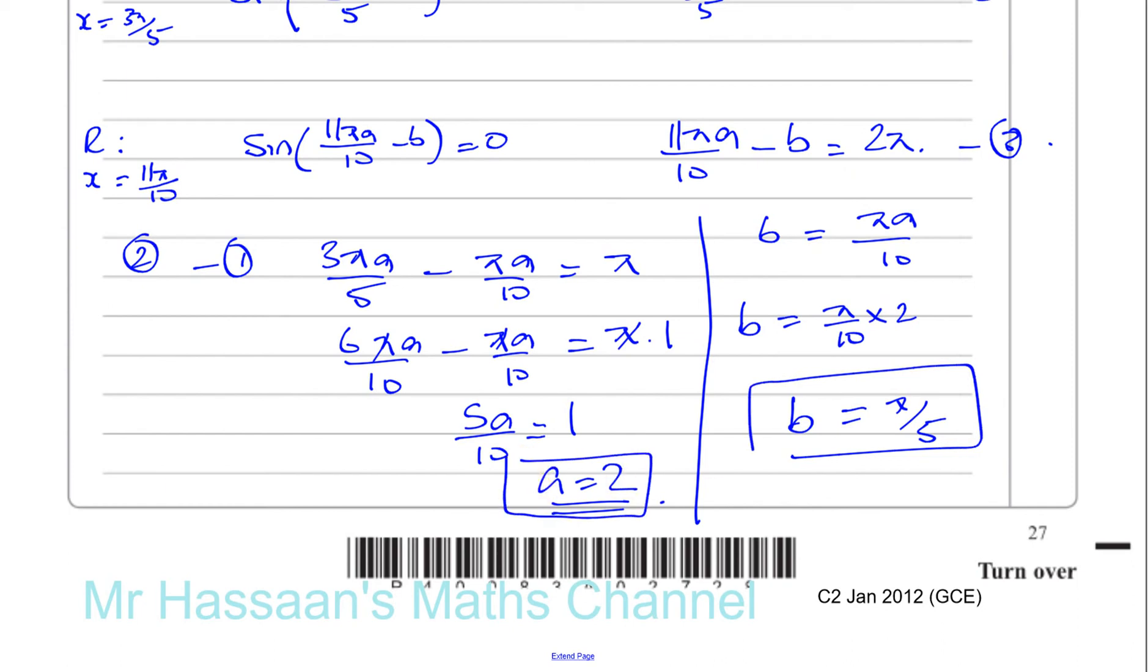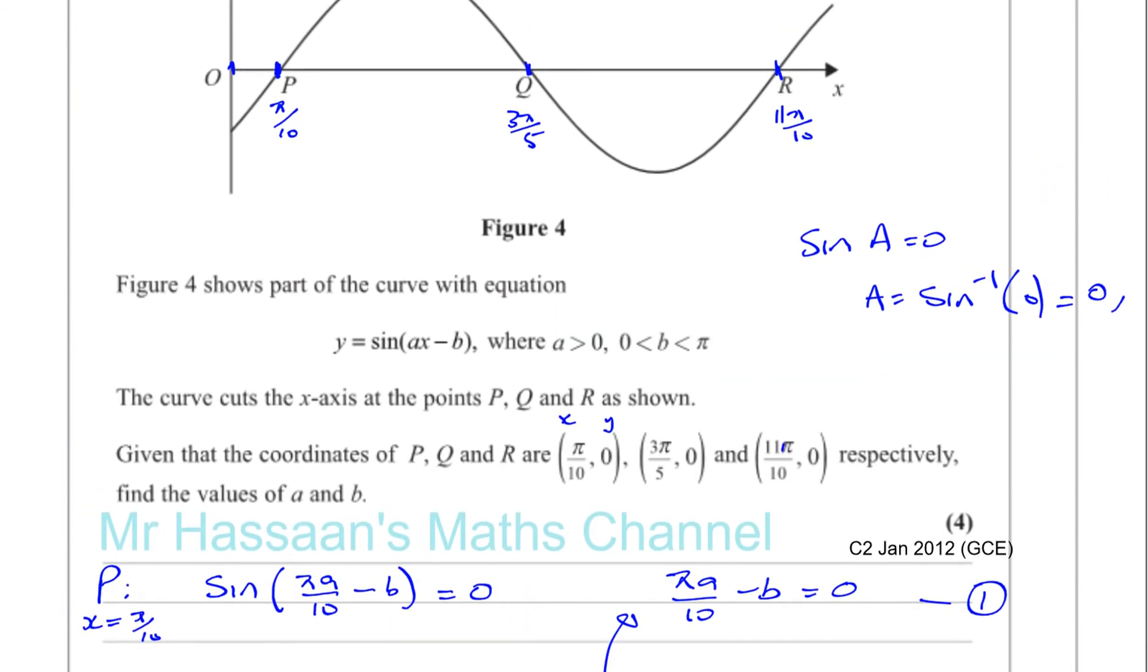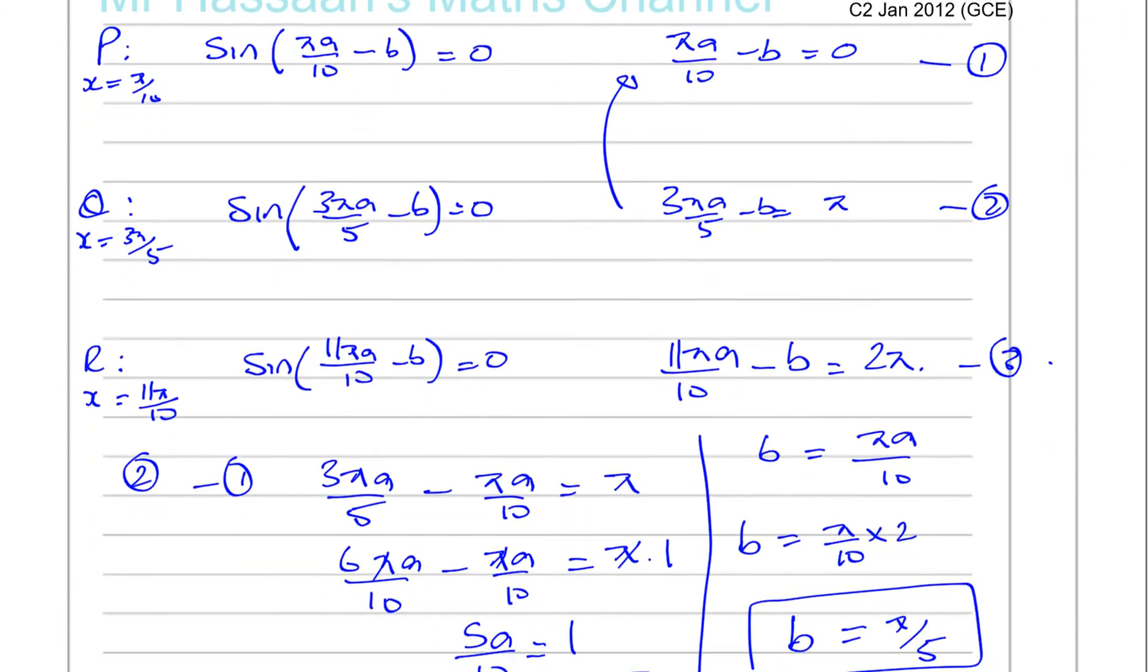So basically the way we did this question is we realized that the sine of all of this equals 0 when at 0 degrees, at pi degrees, at 2 pi degrees. So Ax minus B equals 0 when x is pi over 10, because that's the closest to 0. And Ax minus B equals pi when x is 3 pi over 5, because that's the one that's closest to pi. And Ax minus B equals 2 pi when x equals 11 pi over 10, because that's the one that's closest to 2 pi. So that's how we worked out the answer to this question.